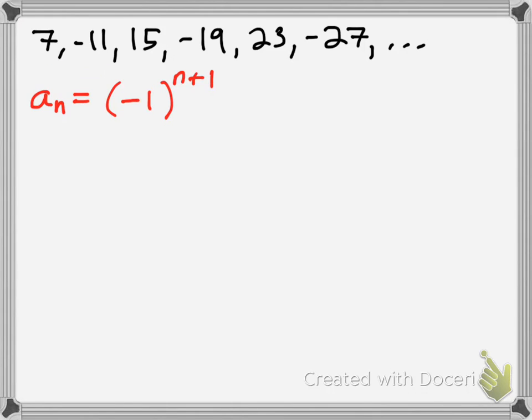You have to look at each term and the next one after. The difference between, if you ignore the negative signs and the positive signs, the difference between 7 and 11 is 4. The difference between 11 and 15 is 4. The difference between 15 and 19 is 4. 23 and 19, 4. 27 and 23, 4, and so on. So if you recognize that pattern, you say, okay, there's got to be a 4 involved.